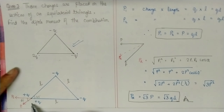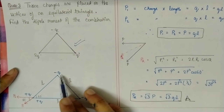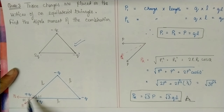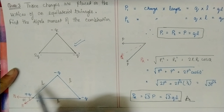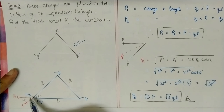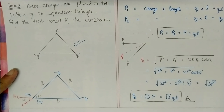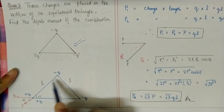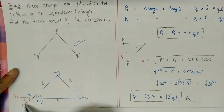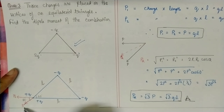The trick is to split the +2q charge into two +q charges. Now we can identify two dipoles: one between +q and the −q on the left (dipole moment p₁), and one between +q and the −q on the right (dipole moment p₂). The direction of each dipole moment is from negative to positive.